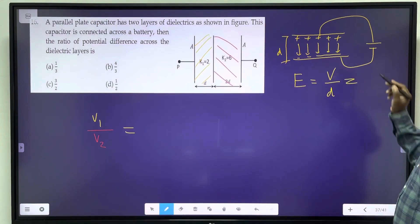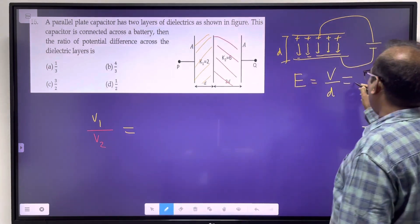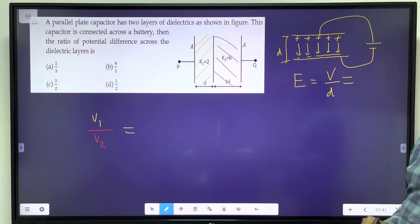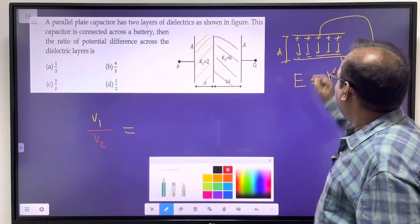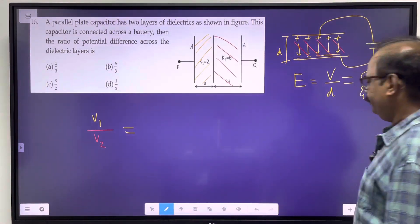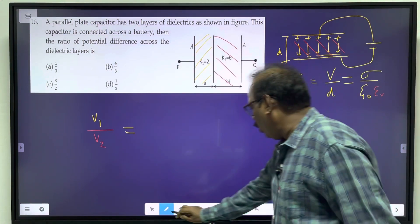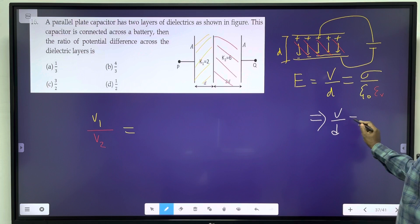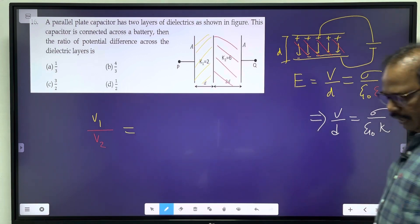We can also say this is equal to the electric field between two plates. If there is a dielectric medium here, then there will be epsilon R. That epsilon R can also be written as V by D, which equals sigma by epsilon naught times the dielectric constant. The relative permittivity is equivalent to the dielectric constant.